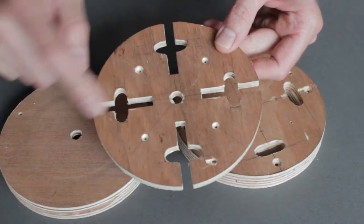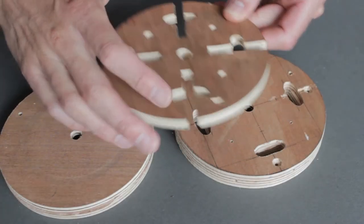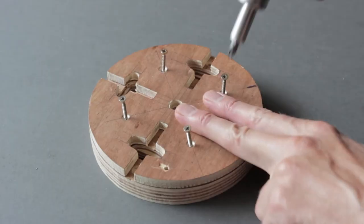I have lots of off cuts of plywood so I first cut three pieces of plywood into rough circles and drilled a hole through their centers.